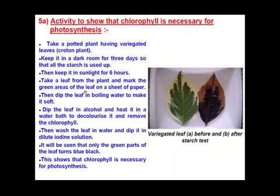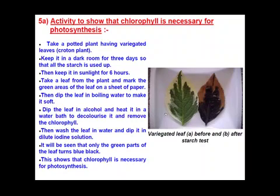After three to four days, keep the plant again in sunlight for about six hours. Next, pluck a leaf from the plant, and on a sheet of paper draw the leaf and roughly mark up the green areas of the leaf.